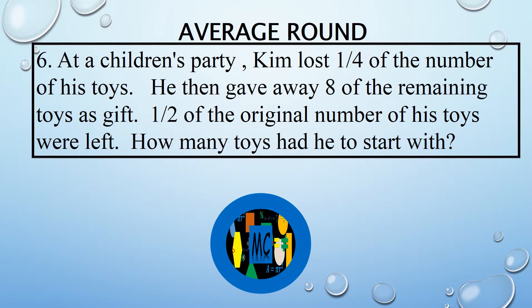At a children's party, Kim lost one-fourth of the number of his toys. He then gave away eight of the remaining toys as gifts. Half of the original number of his toys were left. How many toys had he to start with?